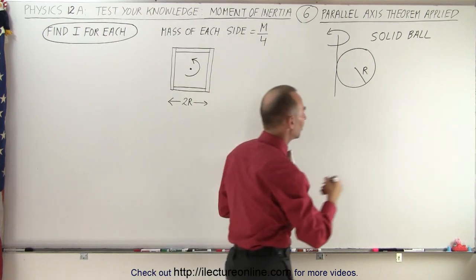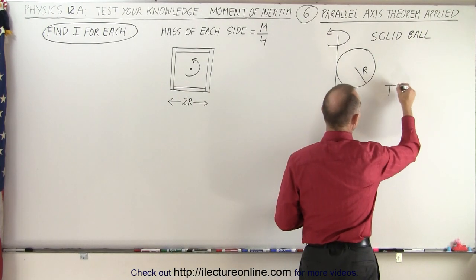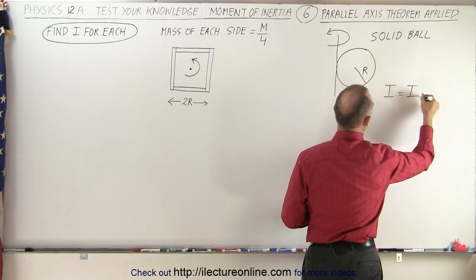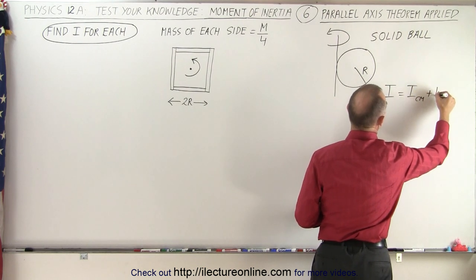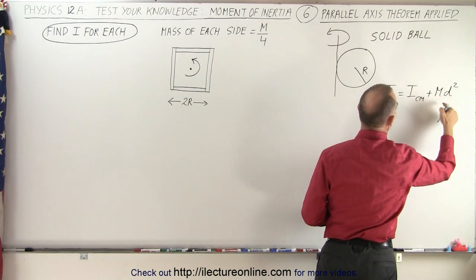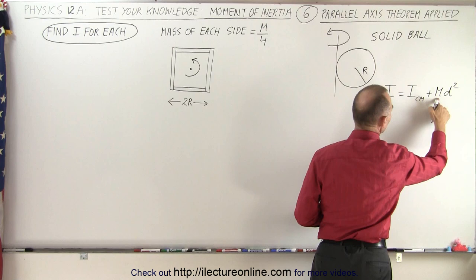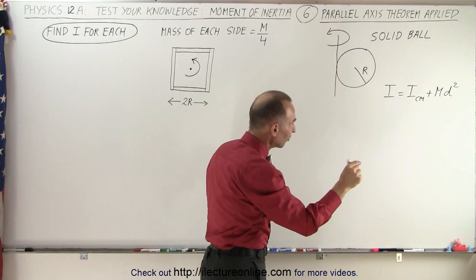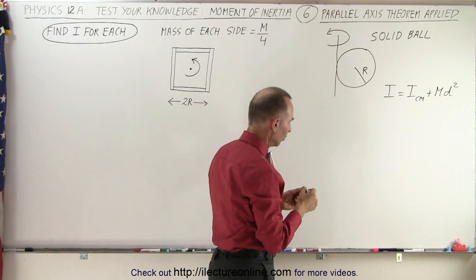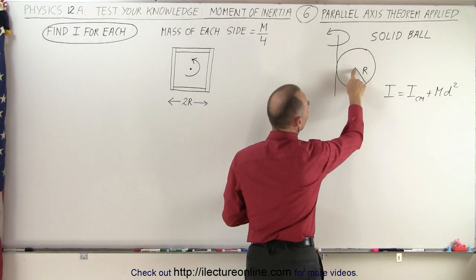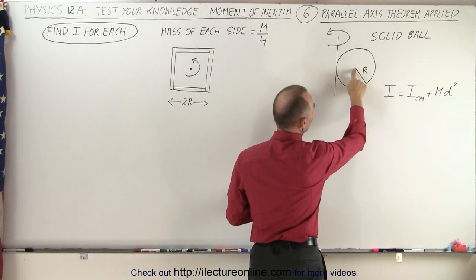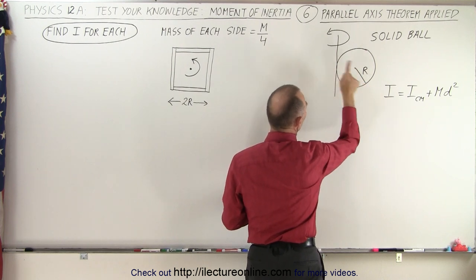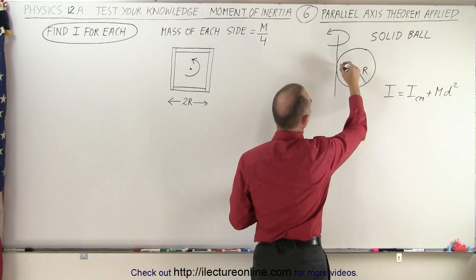The parallel axis theorem tells us that the moment of inertia I of the object is equal to I of the center of mass plus m times d squared, where m is the mass of the object and d is the distance moved from the center of mass to the point of rotation. So in the case of this here, if this is the center of mass of the solid ball,